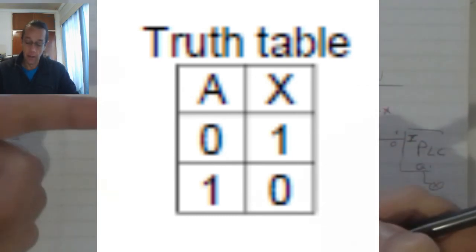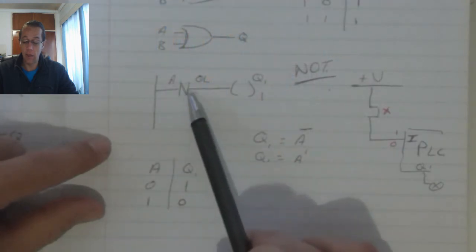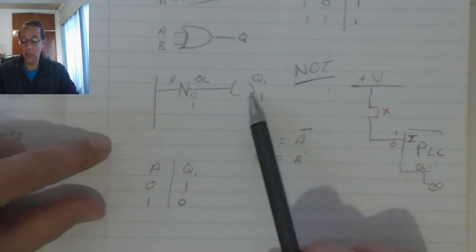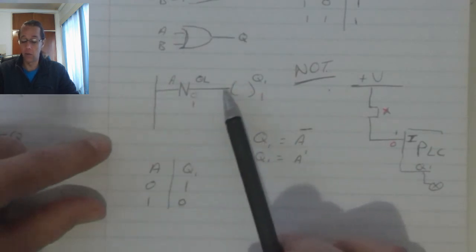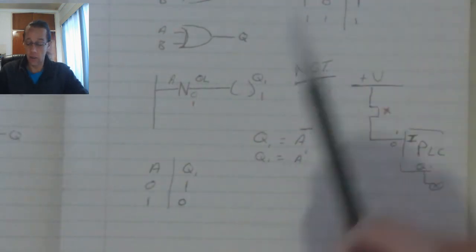Now, we can use that same invert function on the output. But then, everything in that rung, that total result, will then be inverted. In this case, it's just that input that we are inverting.